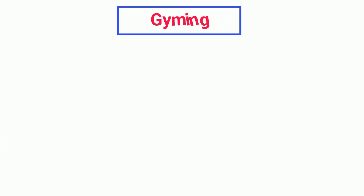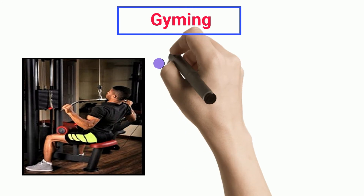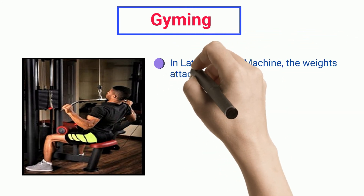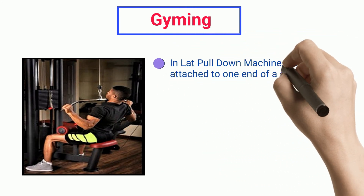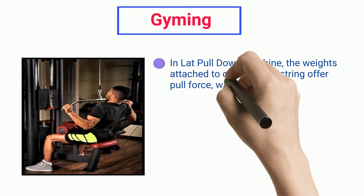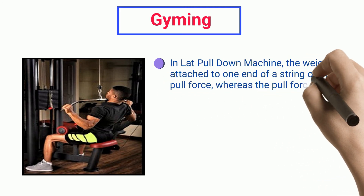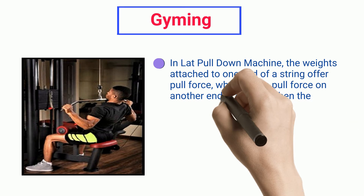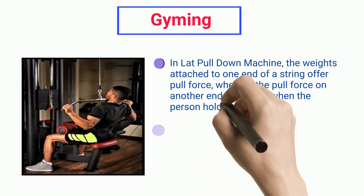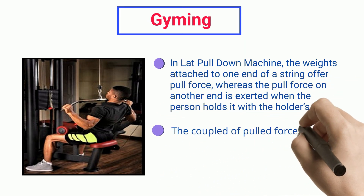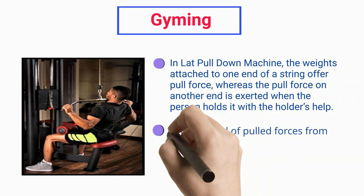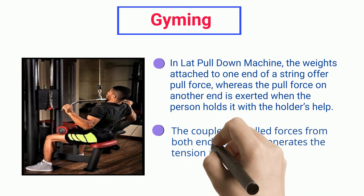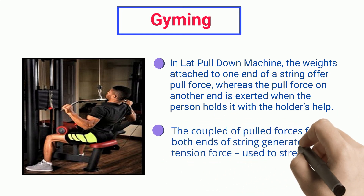Gyming. In a lat pull-down machine, the weights attached to one end of a string offer a pull force, whereas the pull force on the other end is exerted when the person holds it with the holder's help. The coupled pull forces from both ends of the string generate the tension force used to stretch the body muscles.